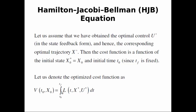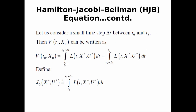V is the integral from t0 to tf of the cost function. We split this integration into two parts: from t0 to t0+Δt, which we call the utility function, and from t0+Δt to tf, which we call the cost-to-go.